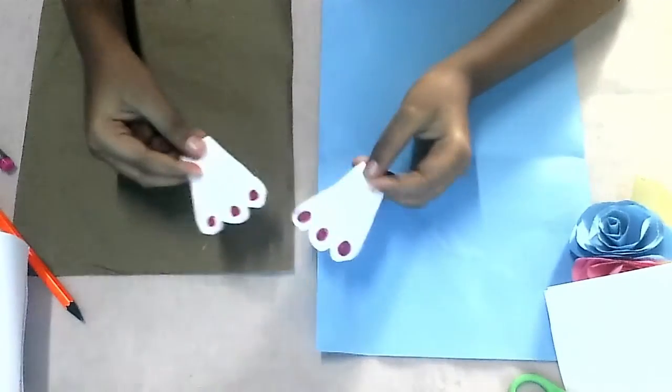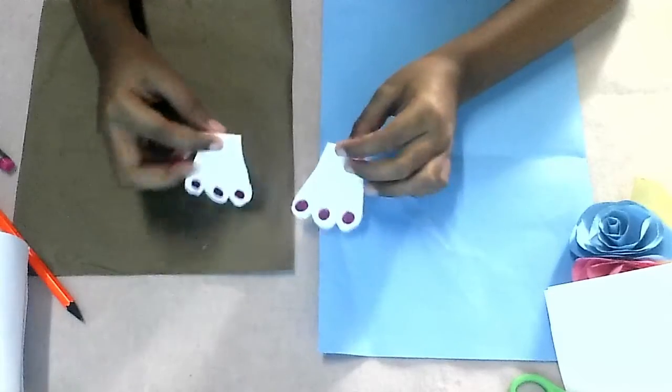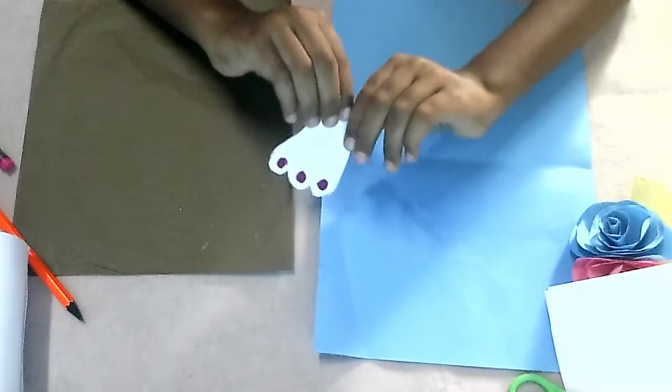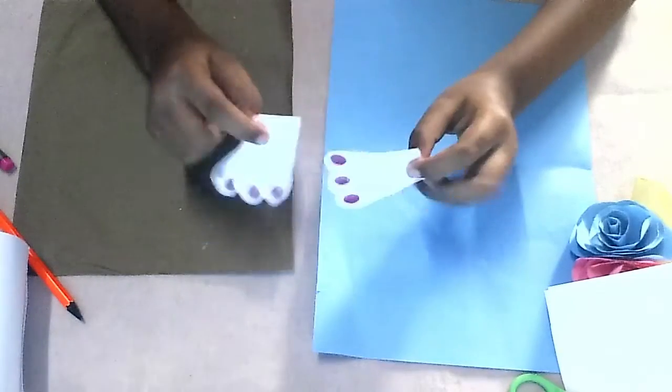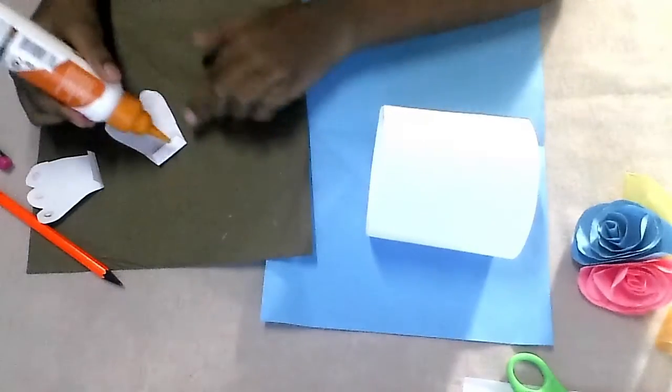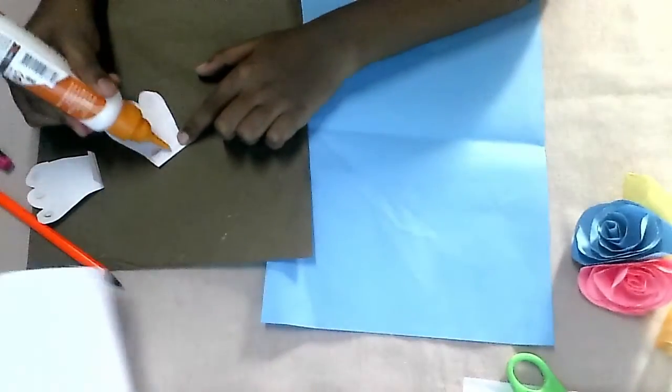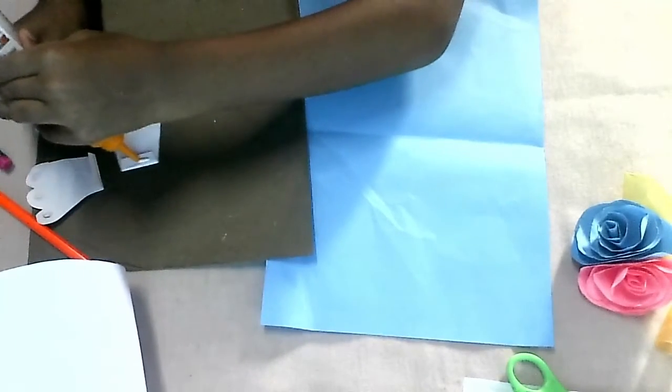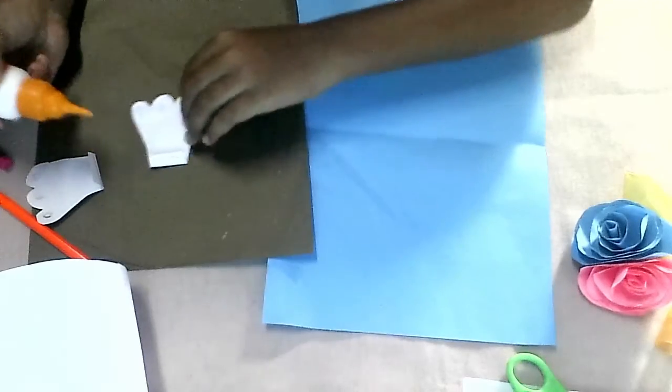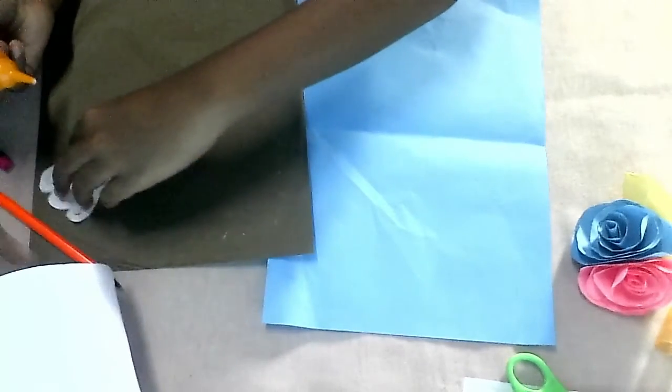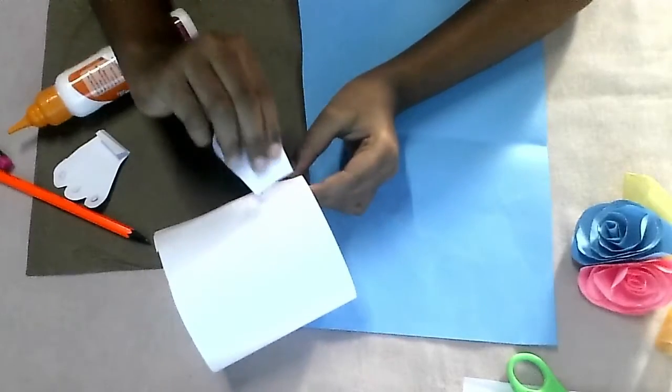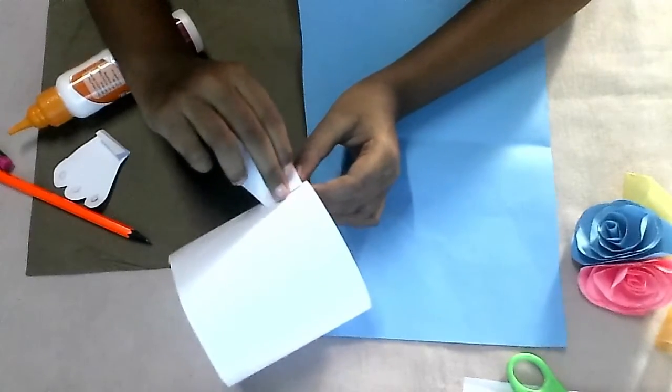I am putting glue on the two legs. Now I put glue, now I am pasting it on the circle.